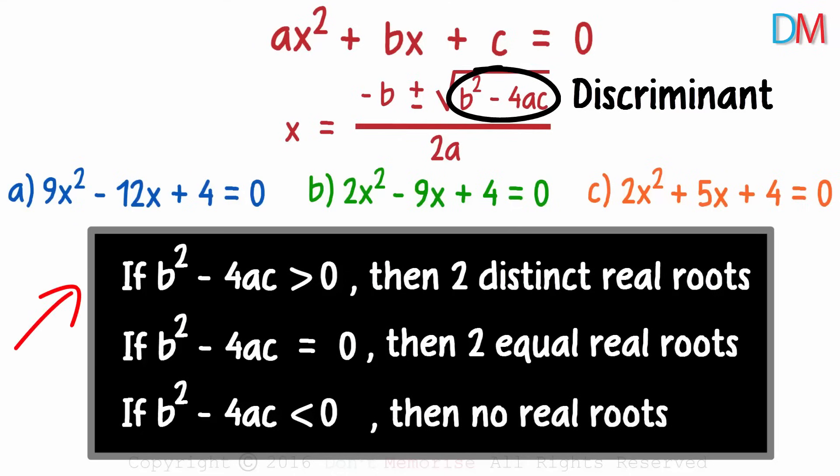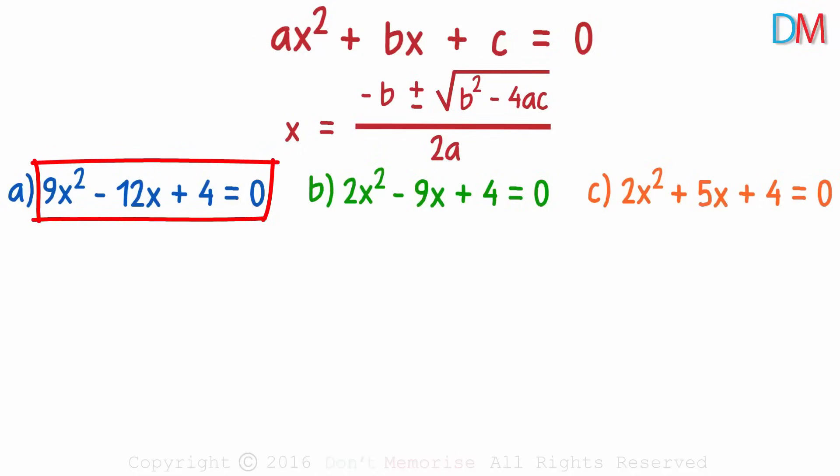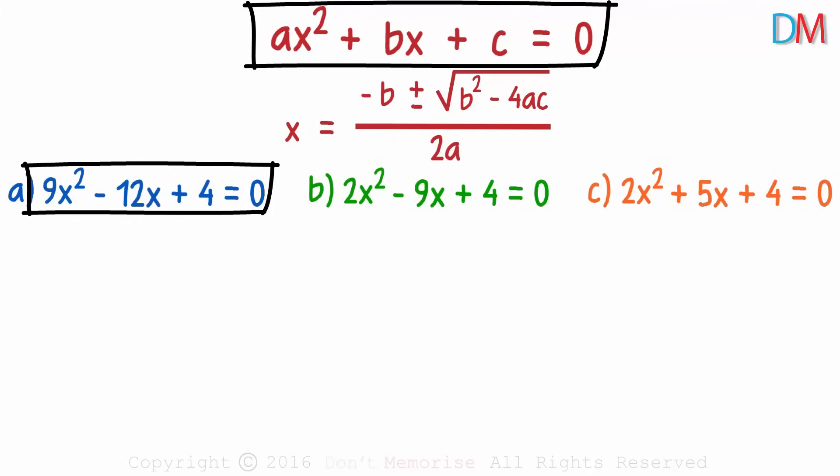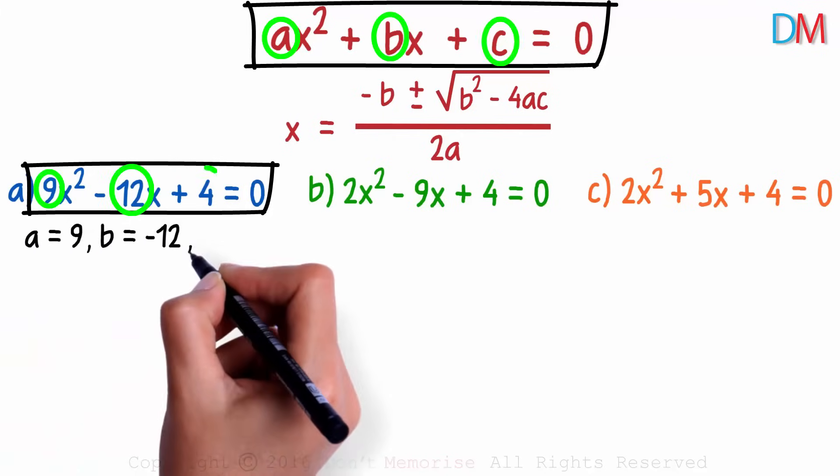Keep this idea in mind, let me solve the first one for you. The first thing we need to do is find the values of a, b and c. Comparing the first equation with the general form, we get the value of a as 9, b as negative 12 and c as 4.